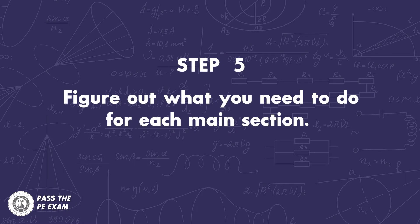Step five: figure out what you need to do for each main section. Now that you've listed all the sections you need to study, you must figure out specifically what to do in each of these main sections. So if you have a study guide with review sections, use it to narrow down what you list on this checklist. For example, if you have statics on the list, create sub-bullets with the different areas of statics that you plan to study, and maybe even list the associated pages or chapters in your study guide. You're creating a solid study plan that's detailed and will keep you on schedule.